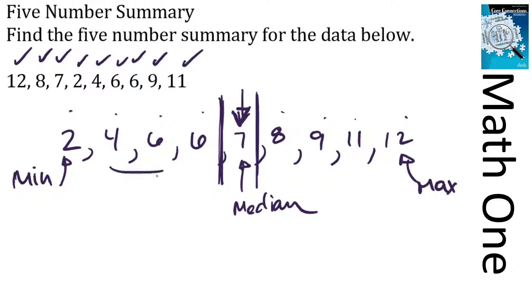So if I want to find Q1, the median of the lower half, I need to add these two numbers and divide by 2. So 4 plus 6 is 10, and half of that's 5. So 5 is Q1, our first quartile.